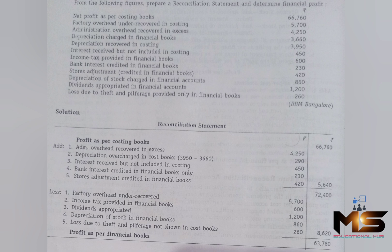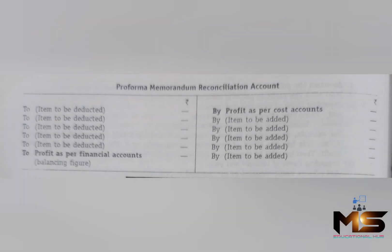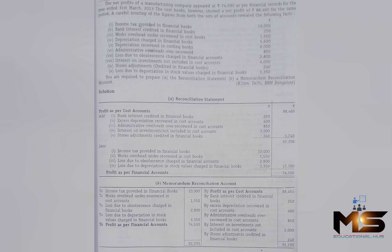If we have a reconciliation statement, we will also have a memorandum reconciliation statement. This memorandum reconciliation statement and the reconciliation statement are closely connected. What we need to add is Profit as per Cost Accounts and add items — that is the credit side of the memorandum statement. The less items and Profit as per Financial Accounts form the debit side of the account.